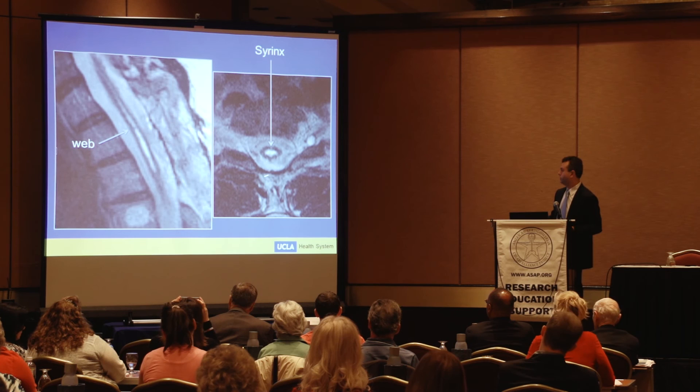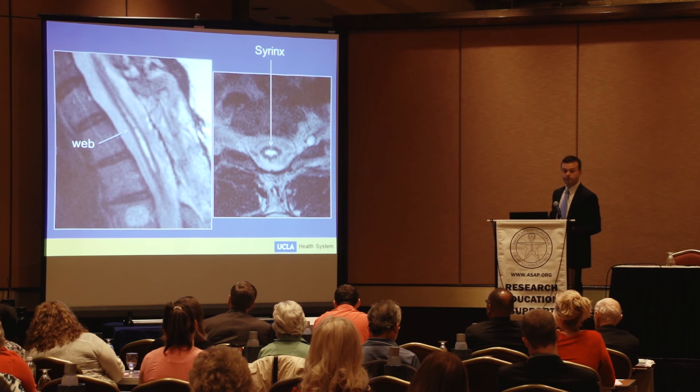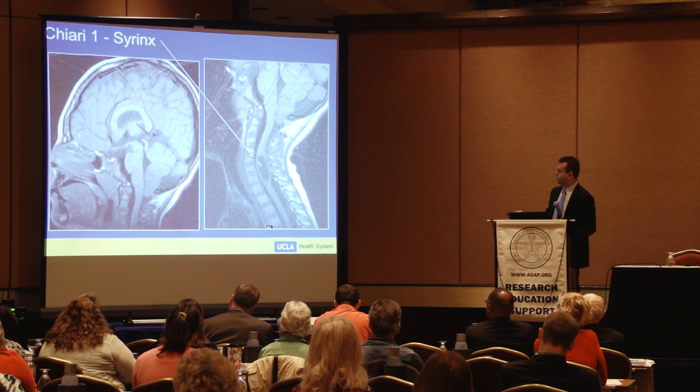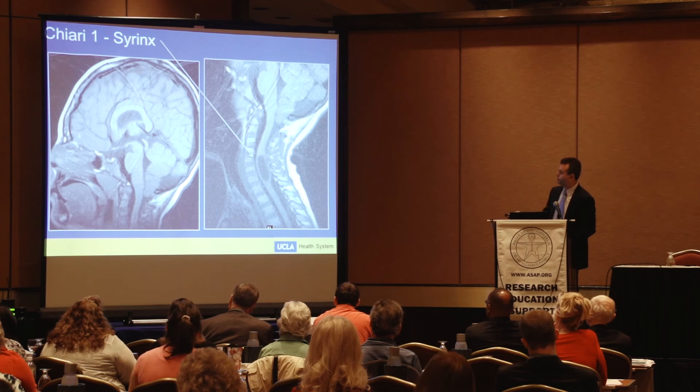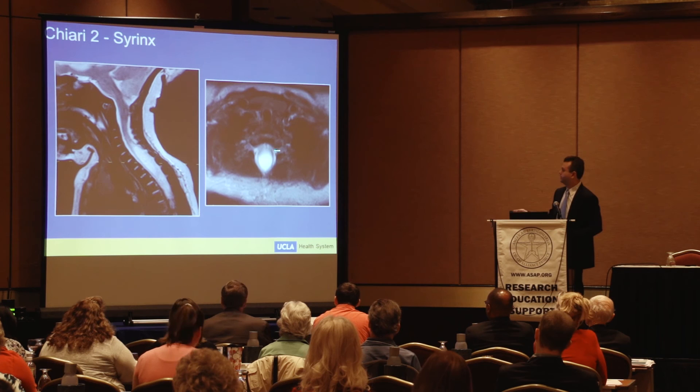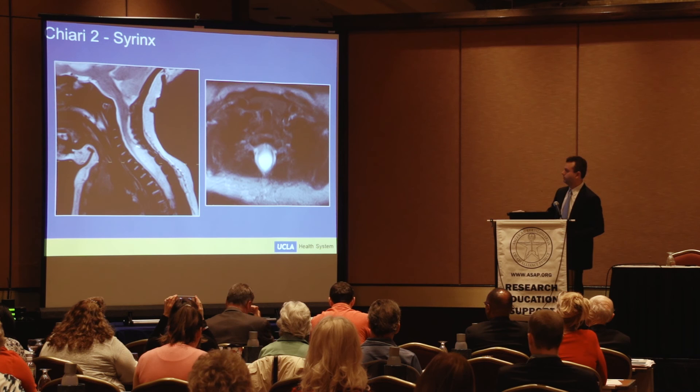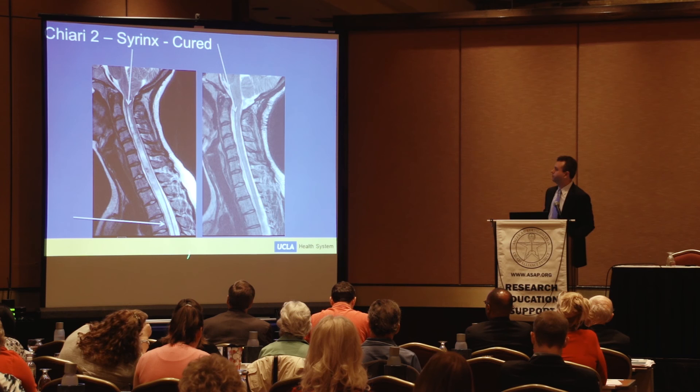Here's an actual syrinx — you can see the difference from a prominent central canal: it has irregular edges, it's larger, and this one has a little web in it. Here's another syrinx — much larger, actually deforming the posterior cord — in a patient with Chiari 1, as the tectum isn't beaked. And here's another very large syrinx, actually affecting the parenchyma of the spinal cord.